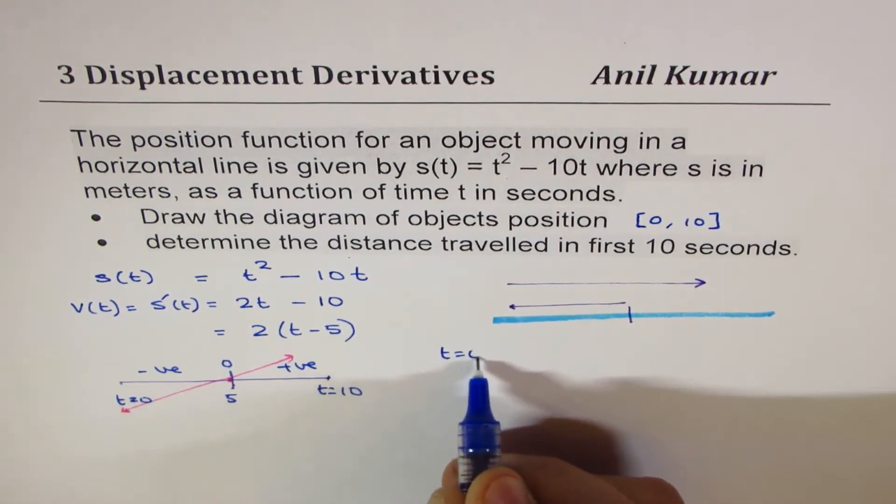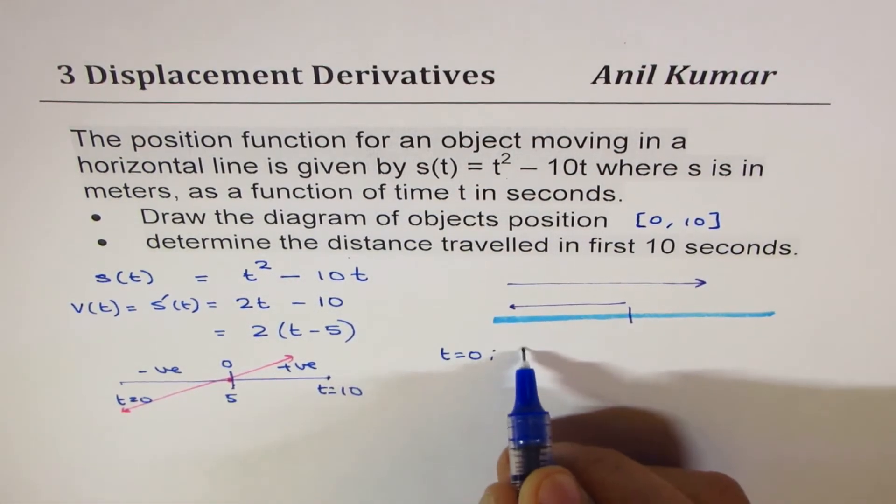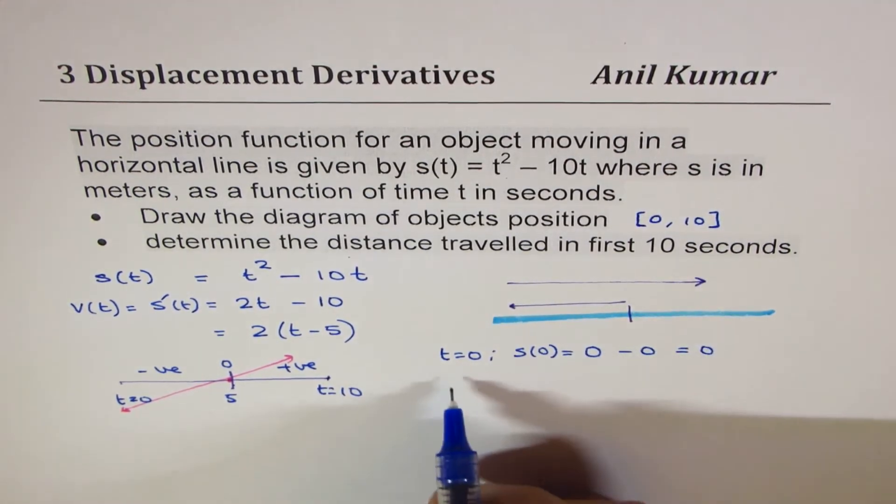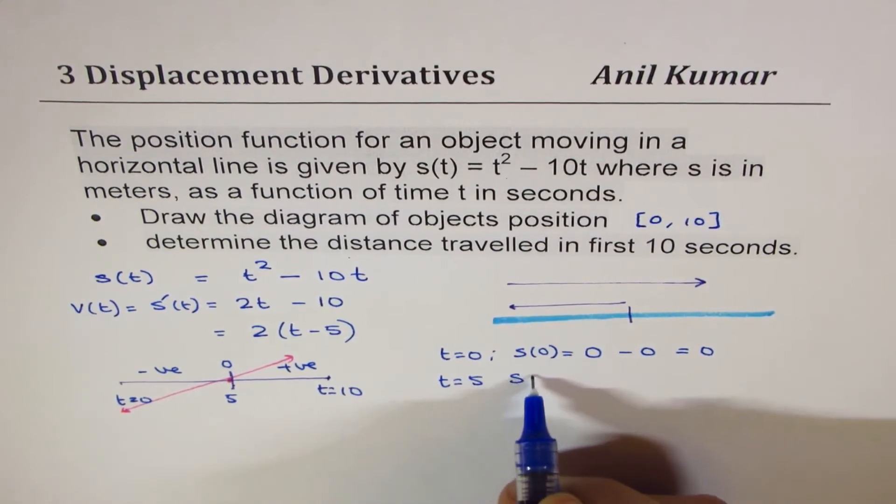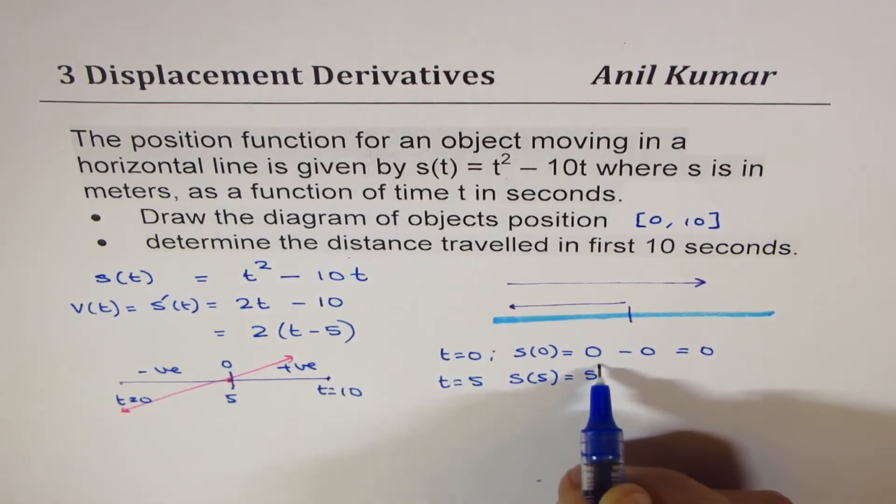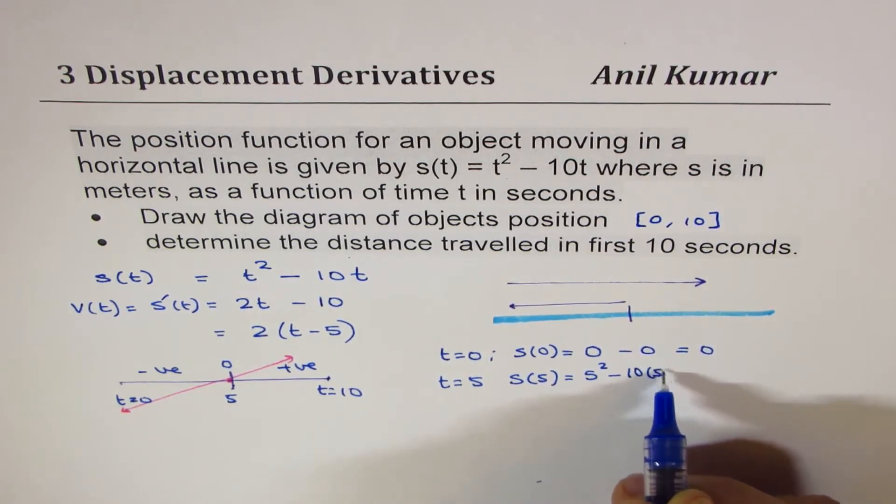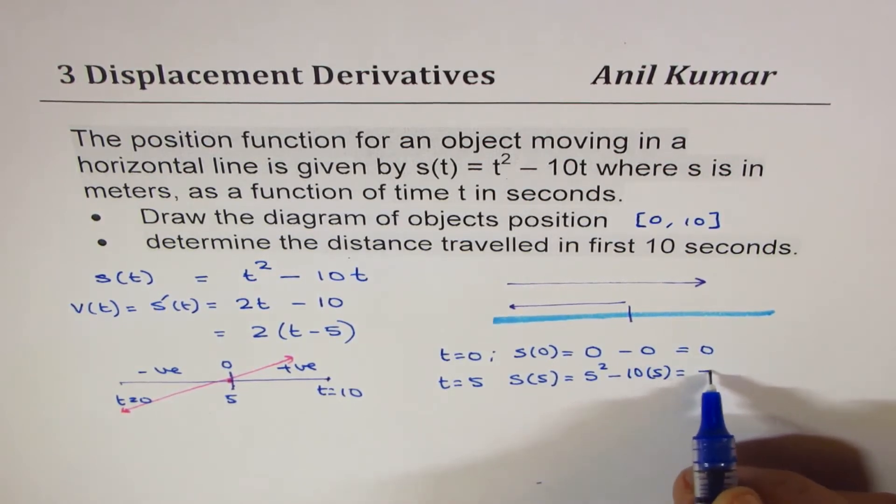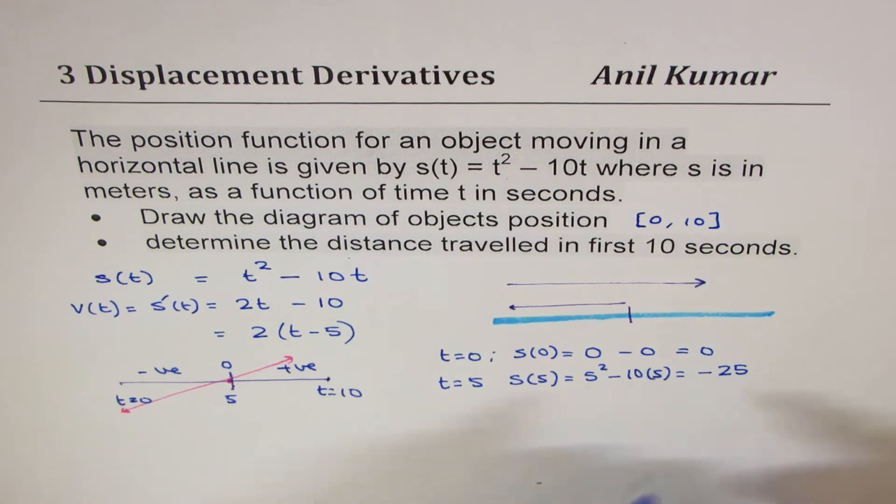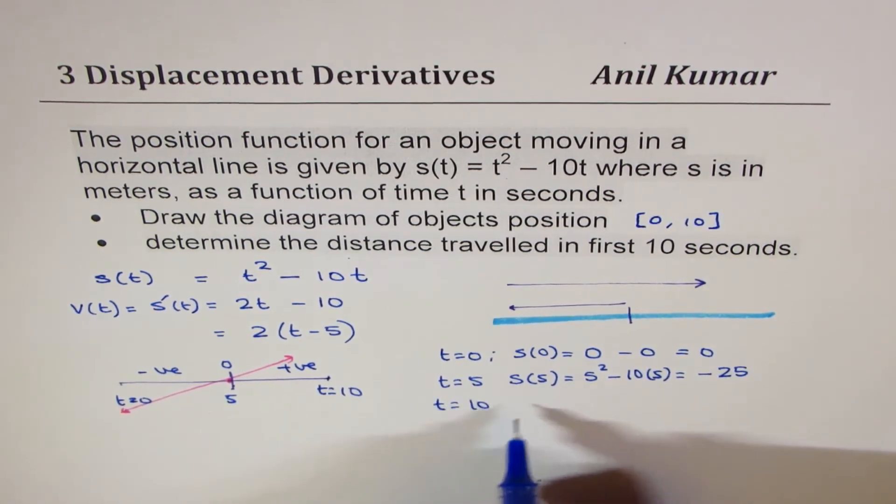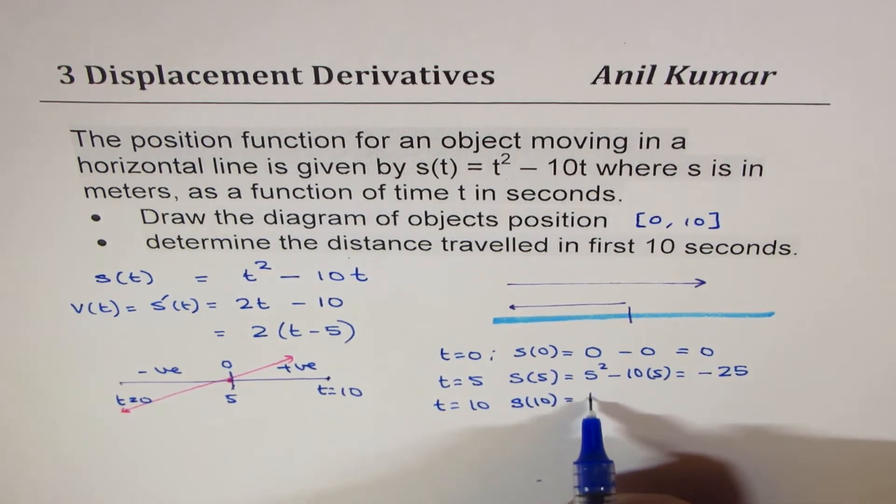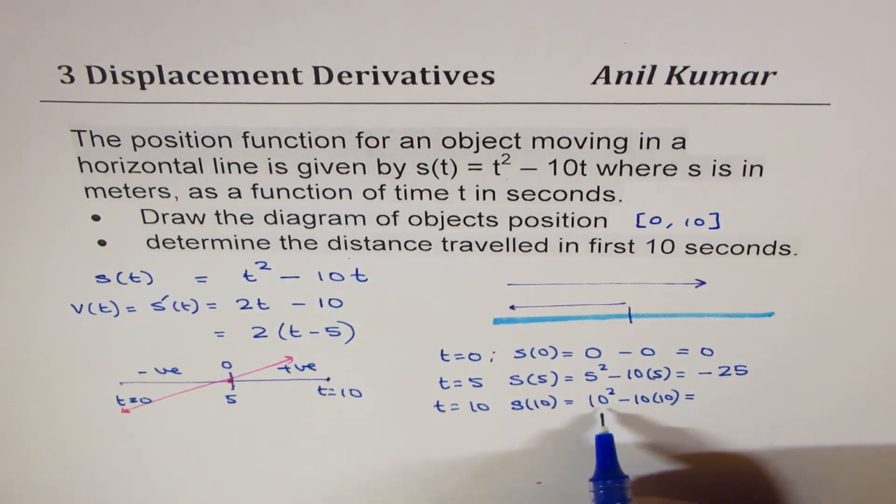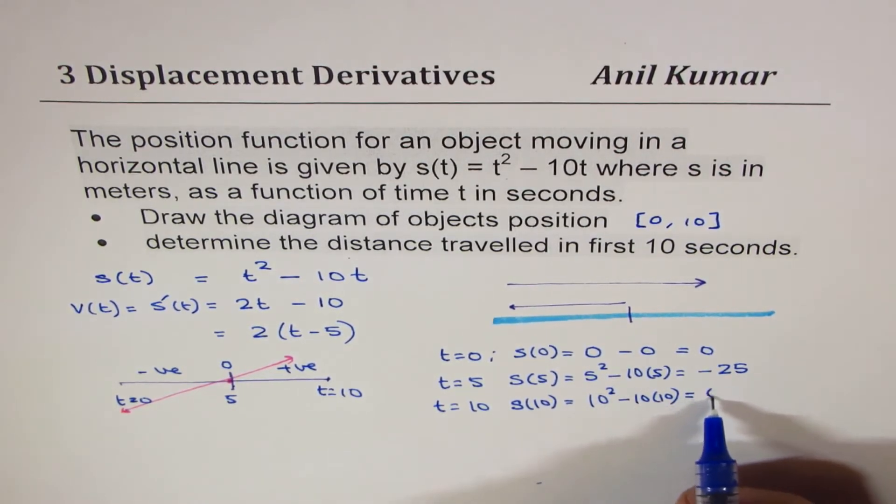So at t equals 0, if I substitute here, we get s(0) equals 0, which is 0 minus 0, which is 0. At t equals 5, displacement is equal to 5 squared minus 10 times 5, which is 25 minus 50 or minus 25. Displacement is in meters. At t equals 10, displacement at 10 will be equal to 10 squared minus 10 times 10, which is 10 squared is 100, and this is also 100, so it is again 0.